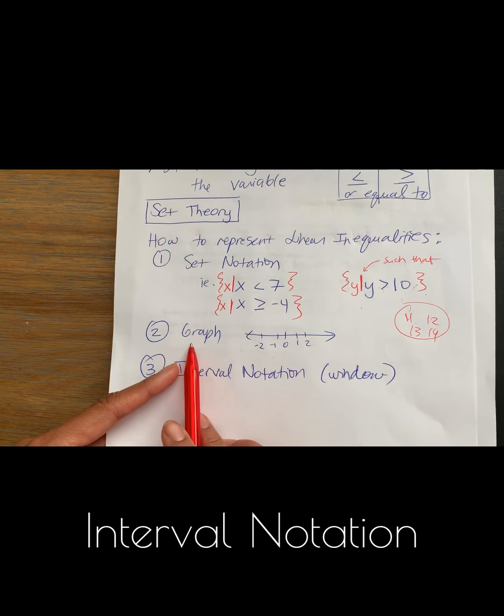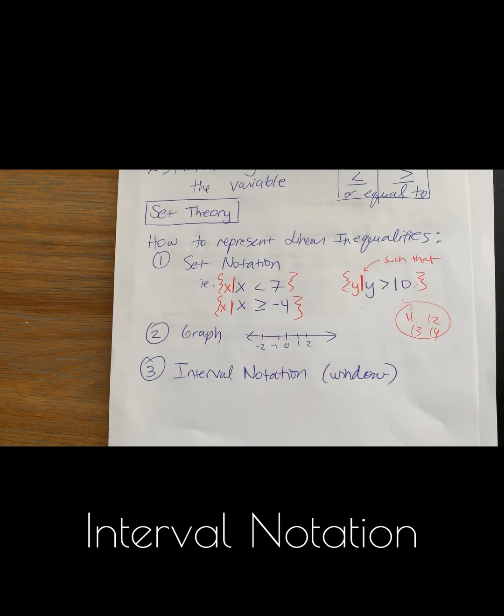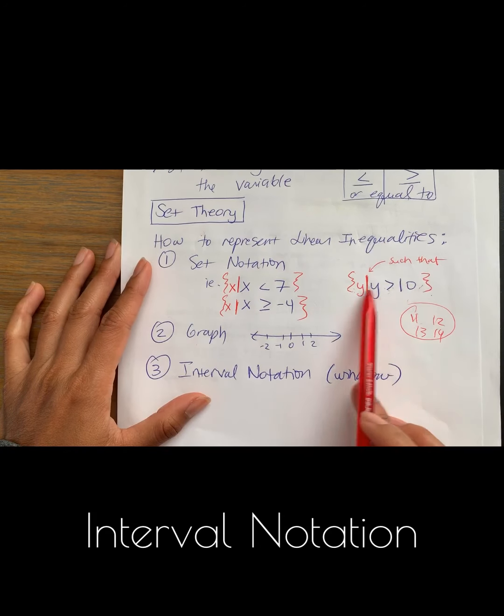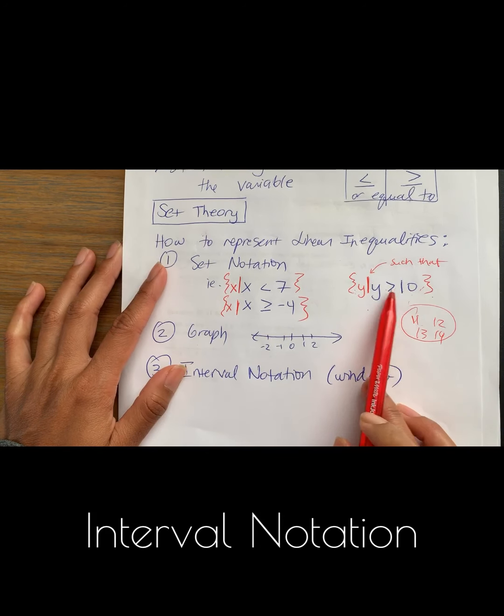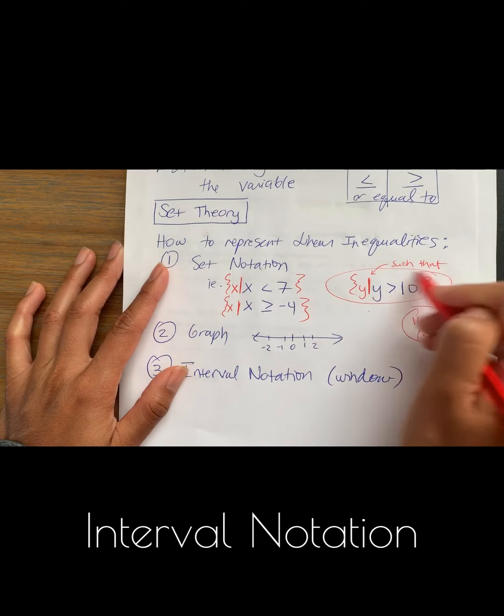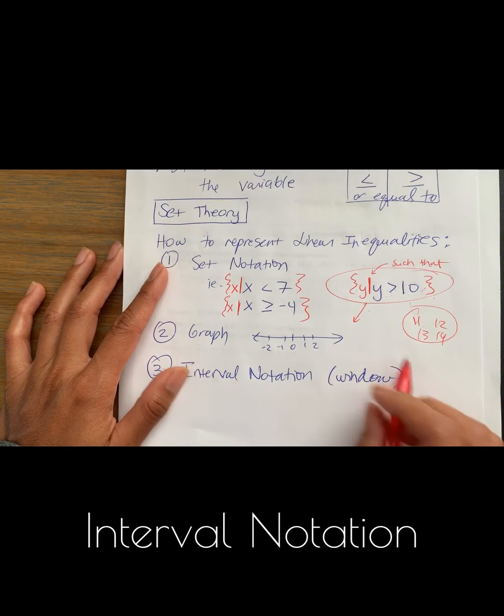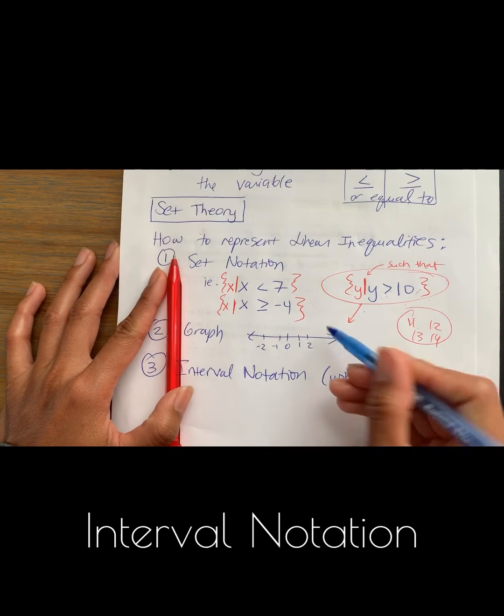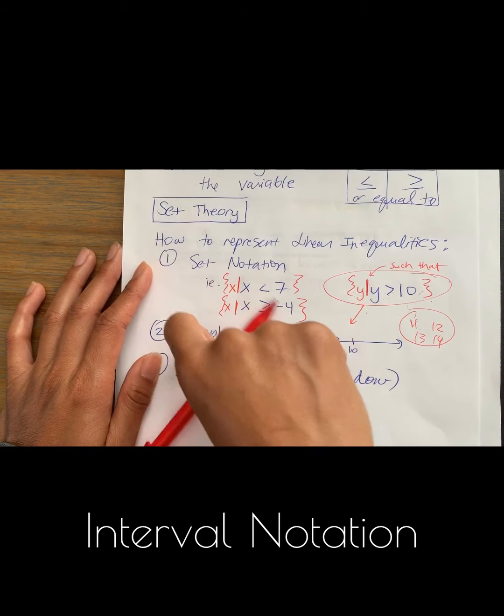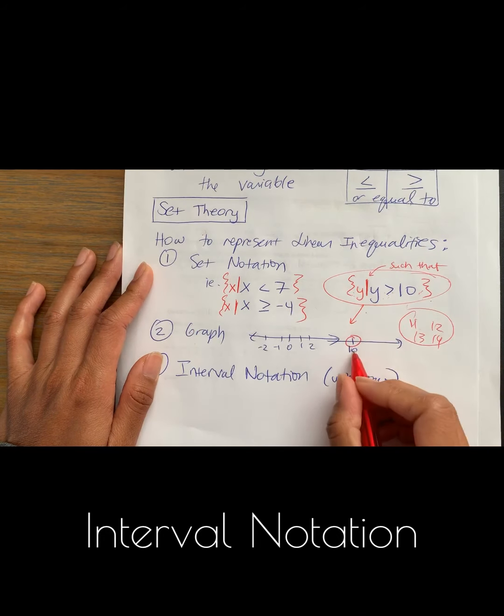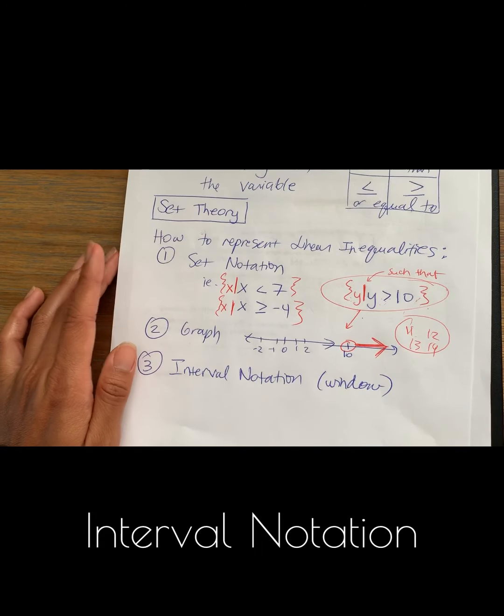And then you could graph it. So when you graph something, you can always represent these inequalities as a graph. So when you graph it, for example, I'm going to just take a look at this. If I'm going to graph this, y is greater than 10, so let's say here's the number 10. Y is greater than 10. I would have an open circle on 10 because there's no equal sign, and greater than means it goes to the right. So here I just drew a picture of it.